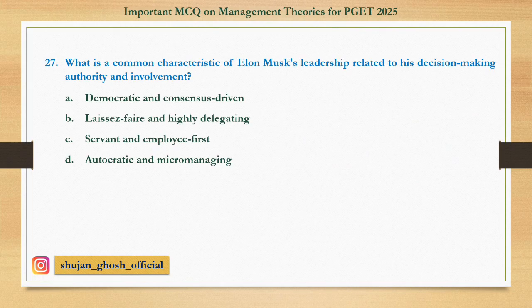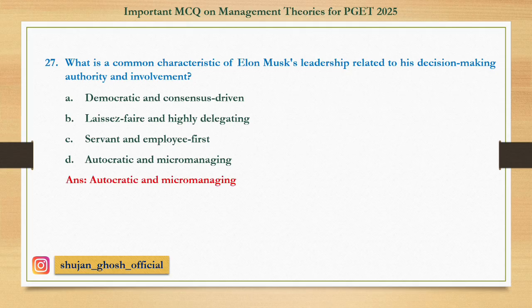Question 27: What is the common characteristic of Elon Musk's leadership related to his decision-making authority and involvement? Option A: Democratic and consensus-driven. B: Laissez-faire and highly concerned. C: Serving and employee-first. D: Autocratic and micromanaging. Answer is Autocratic and micromanaging.